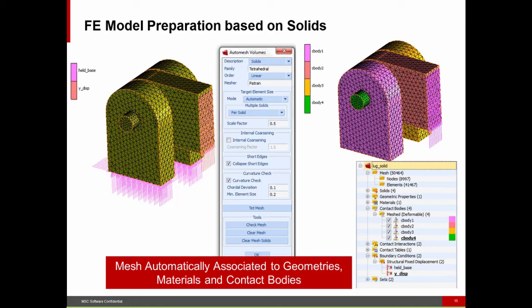This allows us to mesh later in the process. If I changed the geometry — say I did a chamfer or blend — it would regenerate a new finite element mesh automatically, and would automatically associate that mesh with the geometry, boundary conditions, material properties, contact bodies, and all other things available in the product.